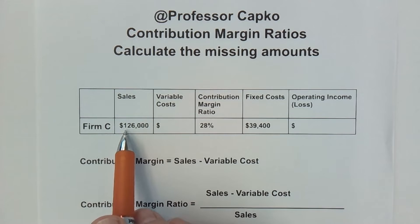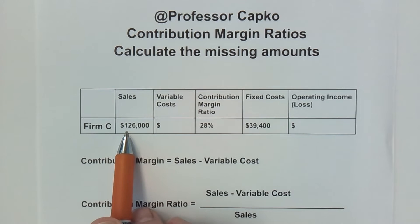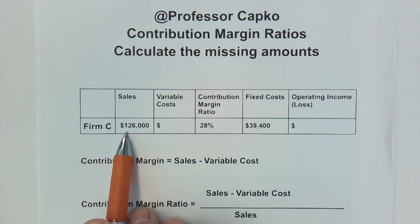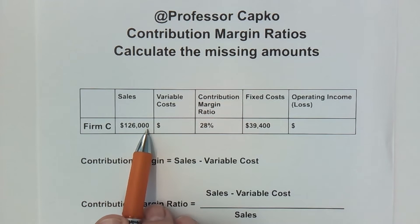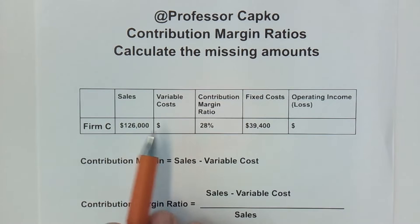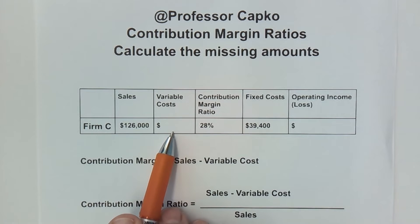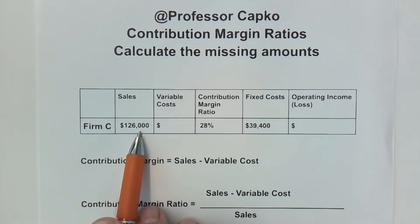Here we're given sales of $126,000. This is aggregate sales — so whatever period we're talking about, whether a month or a year, this is when you add up all the sales. This is not per item; this is the aggregate. We're looking for the variable costs: those that vary with sales.